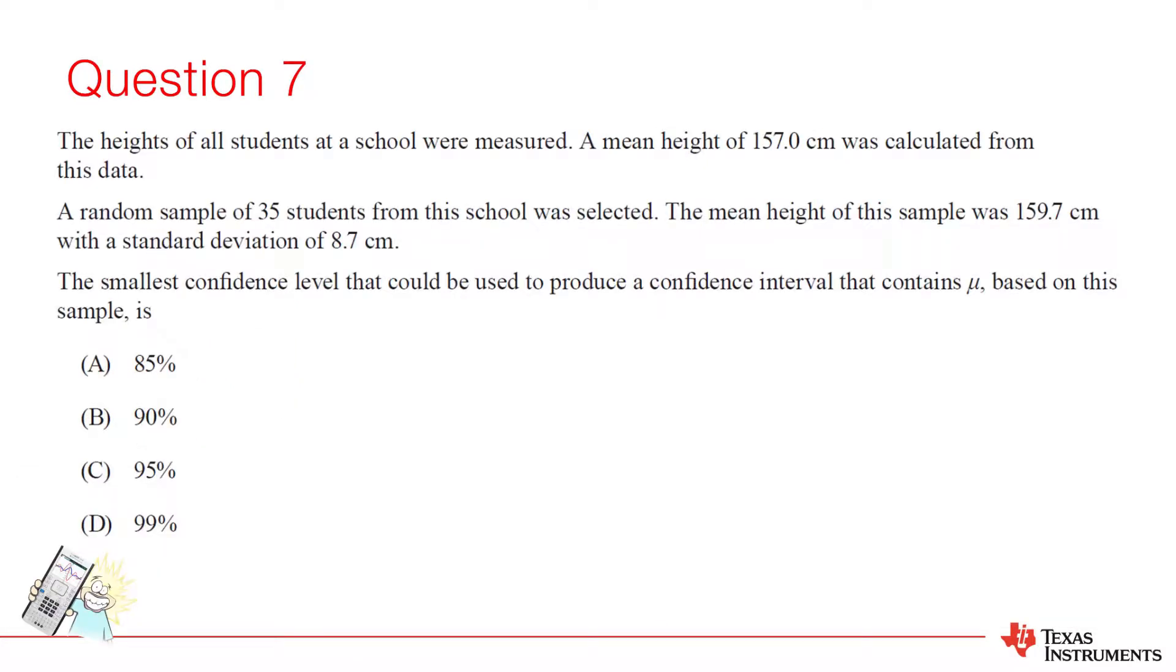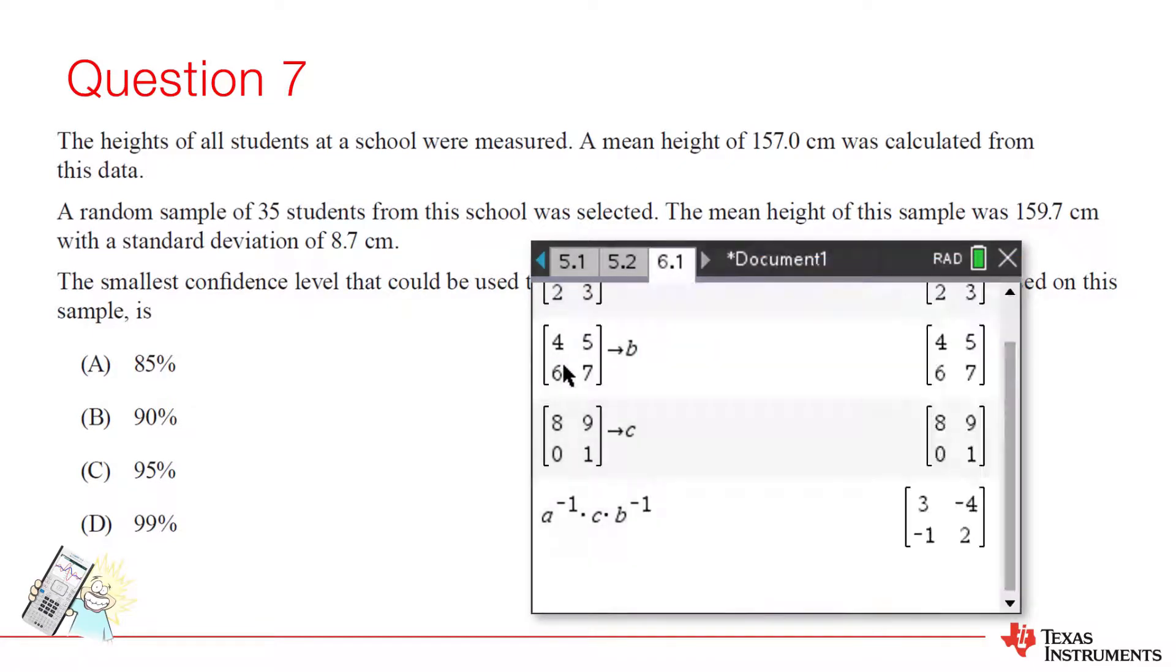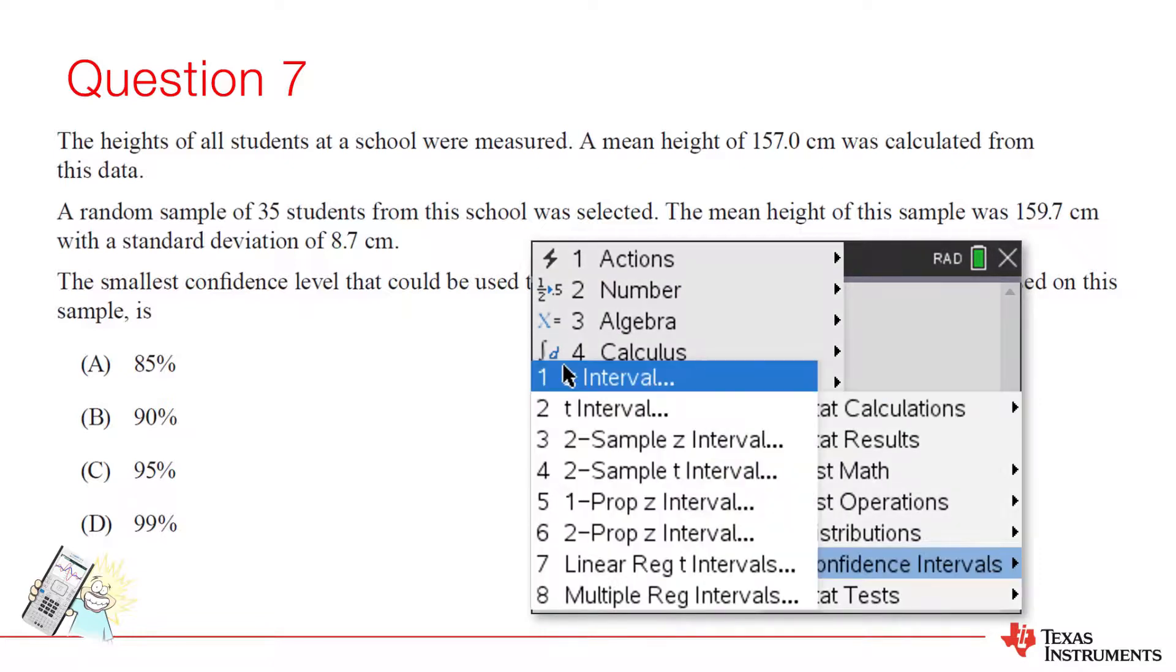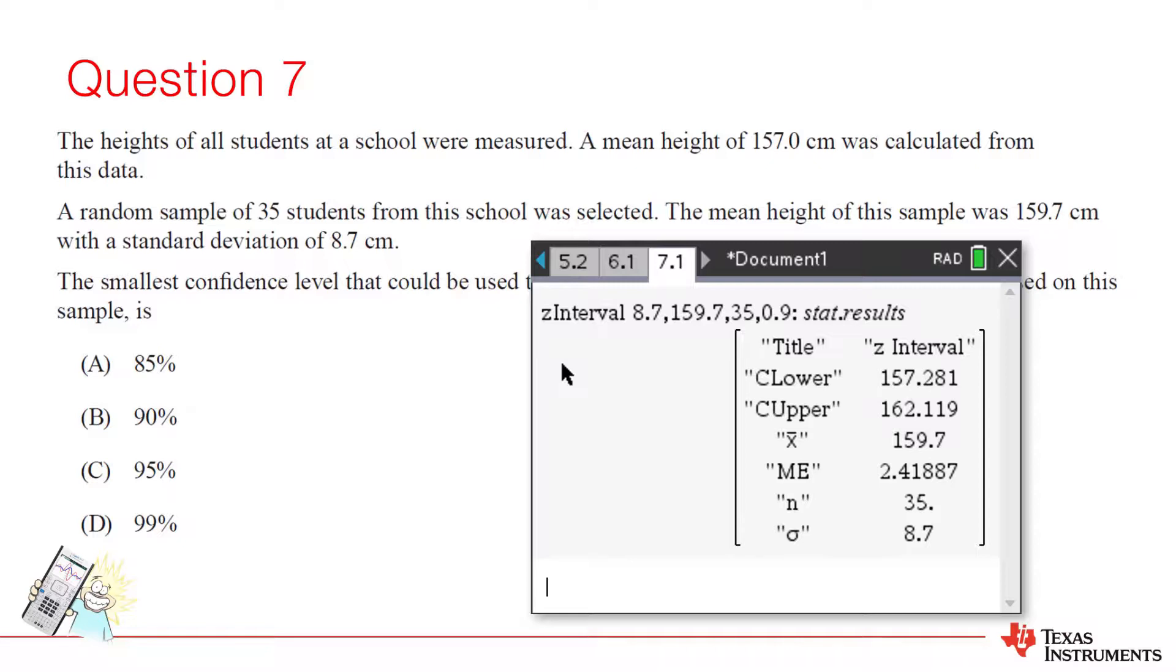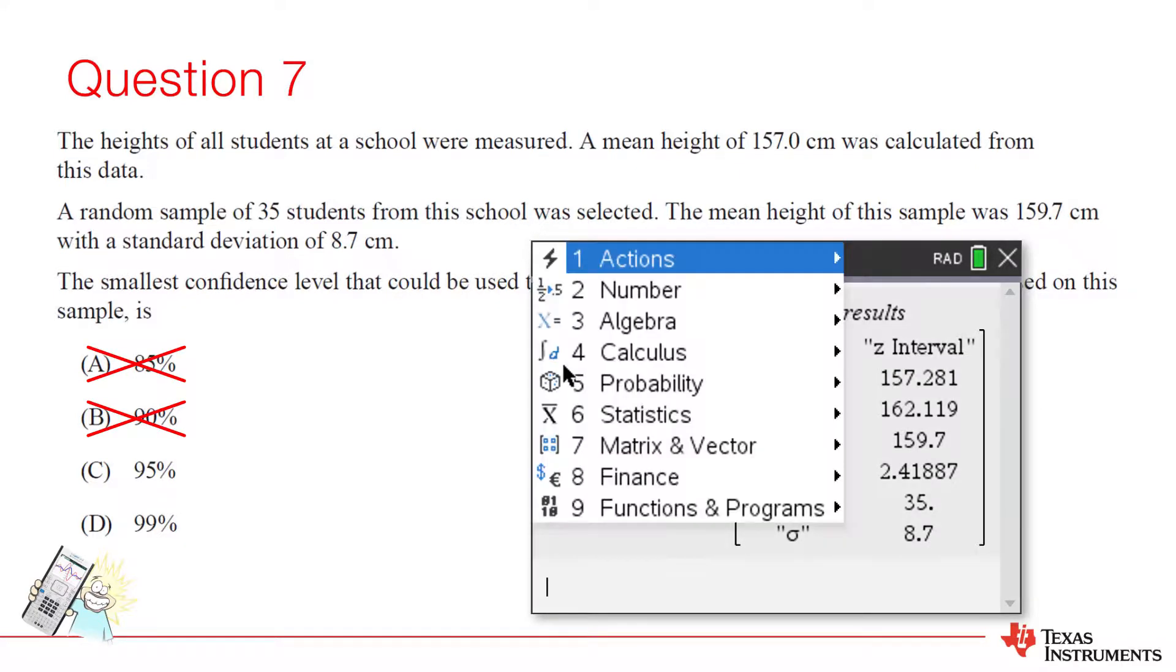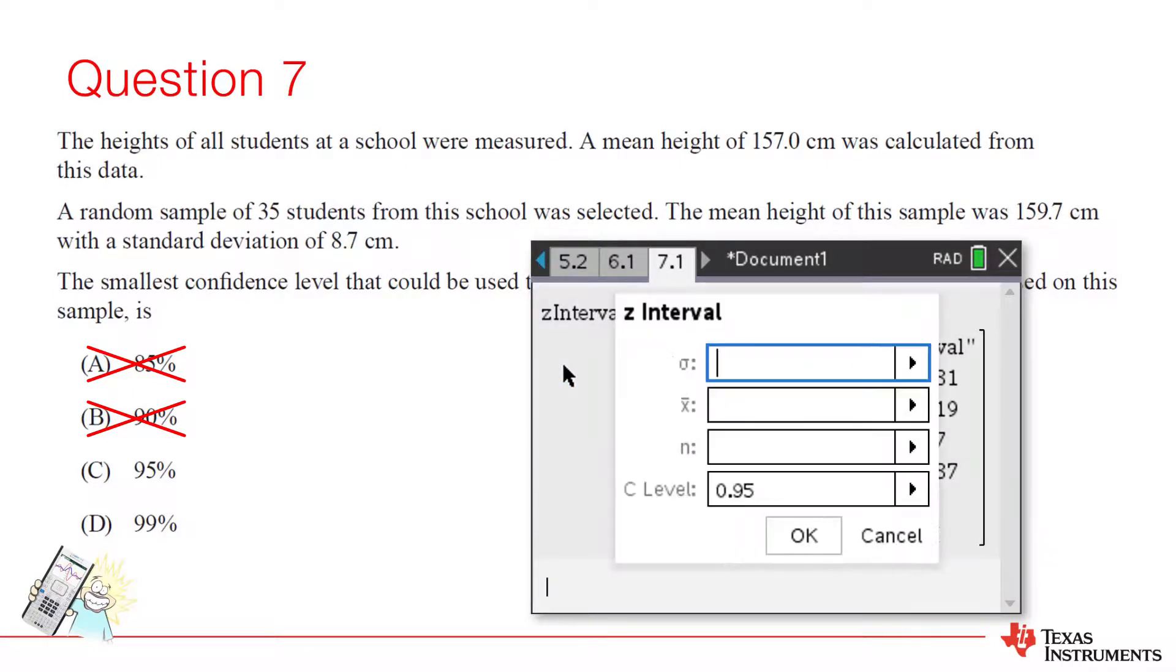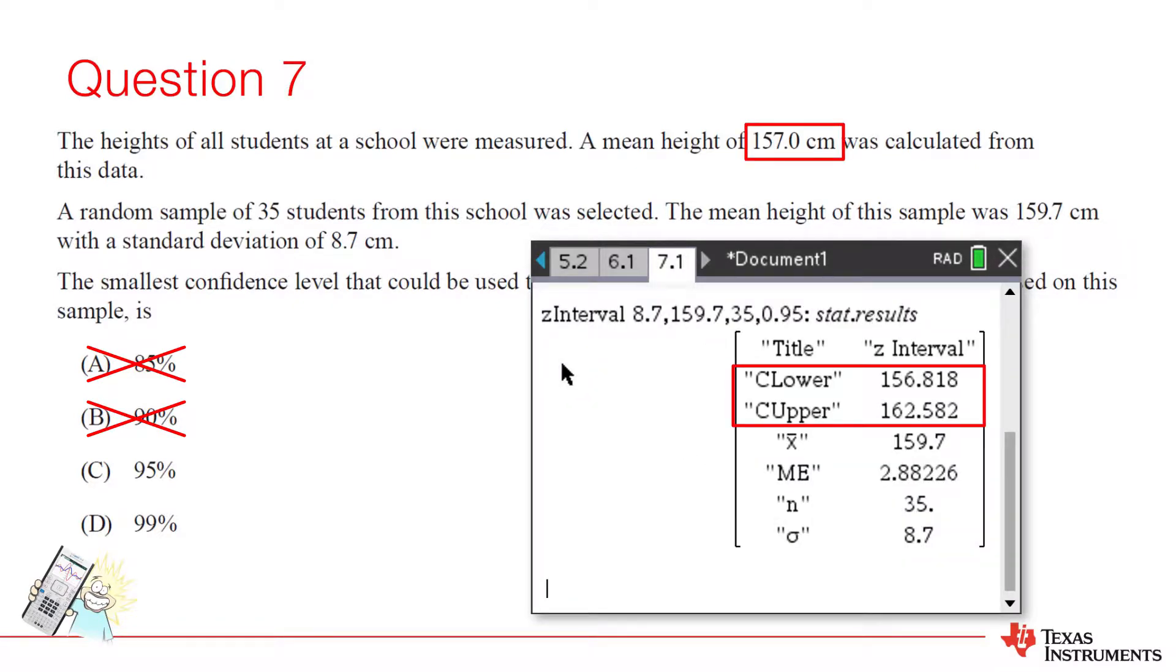Question 7. This is an example whereby hand calculations will most likely be quicker. However, we can solve the problem on the calculator using trial and error. We use a Z interval since we know the sample mean, standard deviation, and sample size. We can determine a confidence interval. I'll start in the middle as a 90% confidence interval. That way I can go up or down accordingly. For a 90% confidence interval, we see that the population mean is not included. So we need to cast a wider net. A 95% confidence interval is the first of our options that includes the population mean. So the answer is option C.